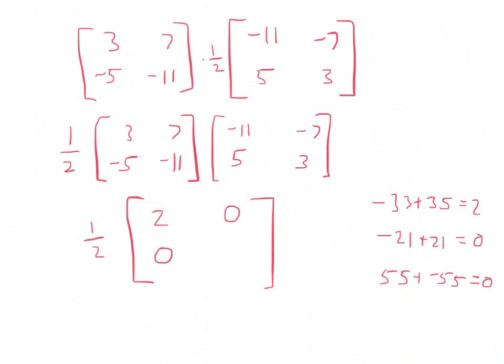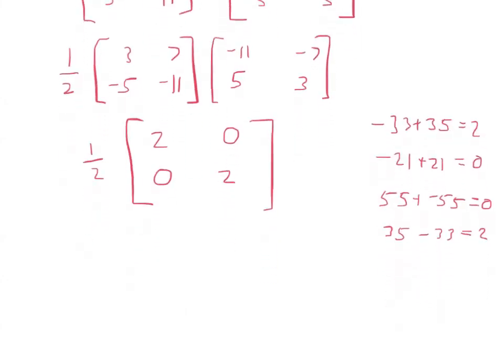And then the last one, I've got the second row times the second column. That's positive 35 minus 33, which is 2. And this is really awesome, because now when I distribute that 1 half into all of them, 1 half times 2 is 1, these are both going to be 0, and 1 half times 2 is 1. It's just what we expected.